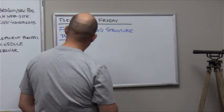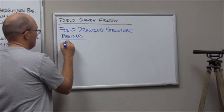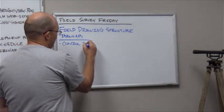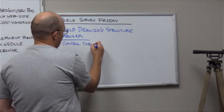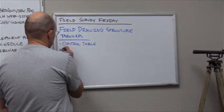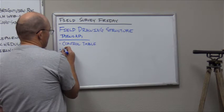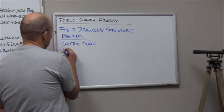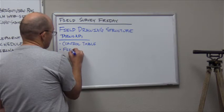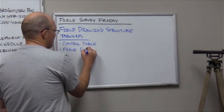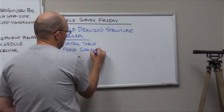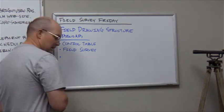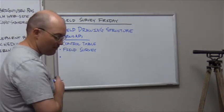I like to have a control table with information on every control point: coordinates, any issues, a good description, how it was set, whether it was primary or secondary. Then I like to have a table on the field survey — information about every field survey: when it was done, who the party chief was, where the field notes are, what the purpose of the survey was, and any interesting things that came up.